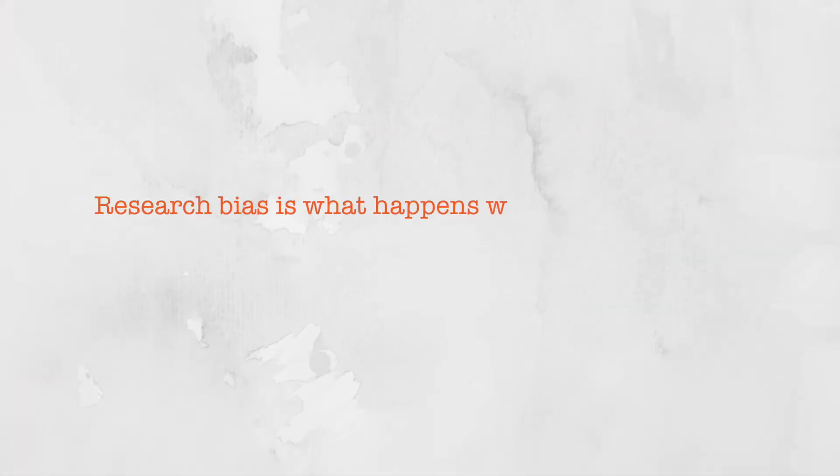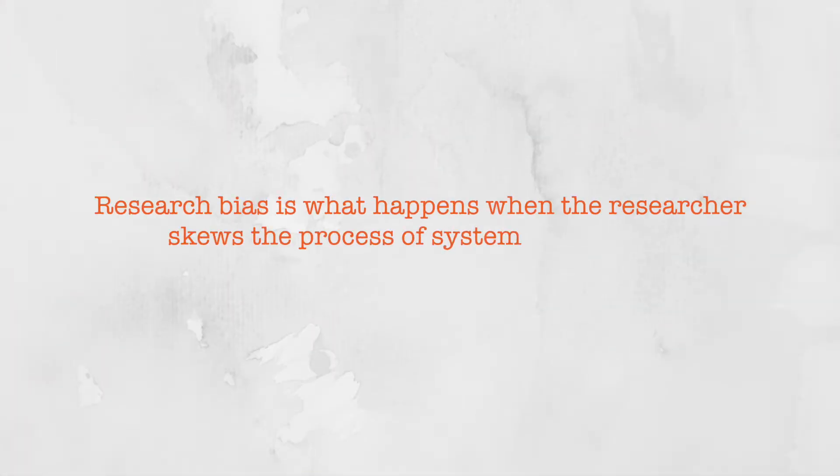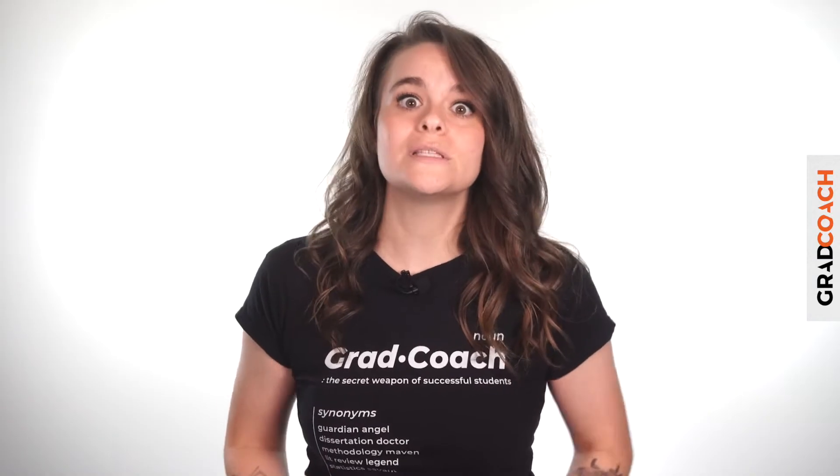So, what exactly is research bias? Simply put, research bias is when the researcher — that is you — intentionally or unintentionally skews the process of a systematic inquiry, which then skews the outcomes of the study. In other words, research bias is what happens when you affect the results of your research by influencing how you arrive at them.